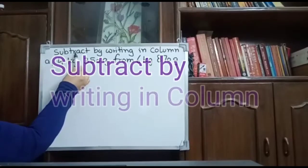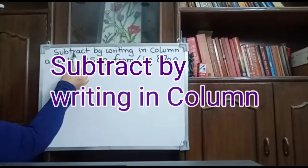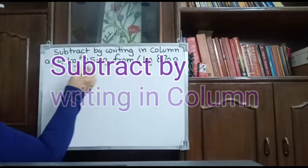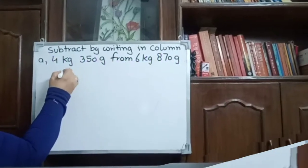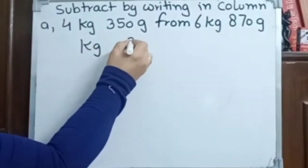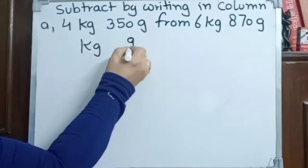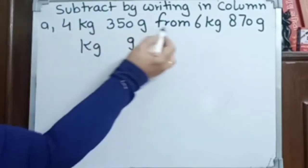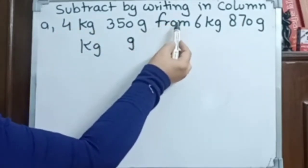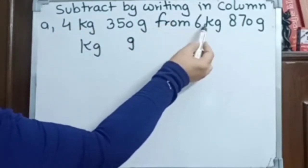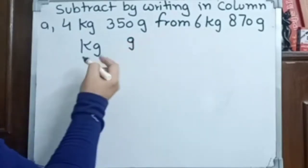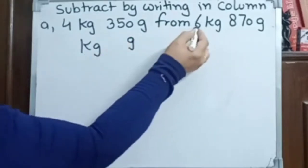This is subtraction by writing in columns. Columns means we have to put kg — kilogram and gram. Now, from — always remember the rule of subtraction: which one is the bigger number and which one comes after 'from'. That bigger number will be on the upper side.